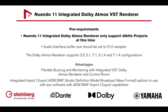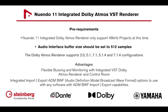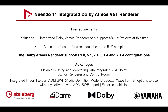Nuendo 11's integrated Dolby Atmos VST renderer only supports 48 kHz projects at this time, and the buffer size of the audio interface — in this example the Yamaha AIC128 Dante accelerator card — should be set to 512 samples. The Dolby Atmos renderer supports 2.0, 5.1, 7.1, 5.1.4, and 7.1.4 speaker configurations.